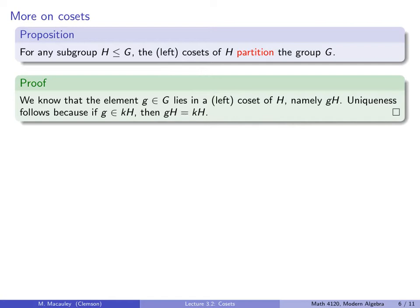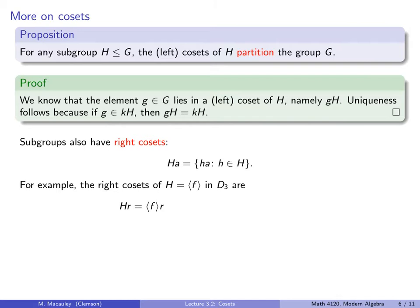Subgroups also have right cosets. We define HA as the set of all elements that are products of something in H times A. Let's do the same example as before but with right cosets. Take the subgroup generated by F in D3. The coset E·H is just H itself. The right coset H·R is this subgroup times R — that is, the set {E, F} times R — giving elements R and FR.